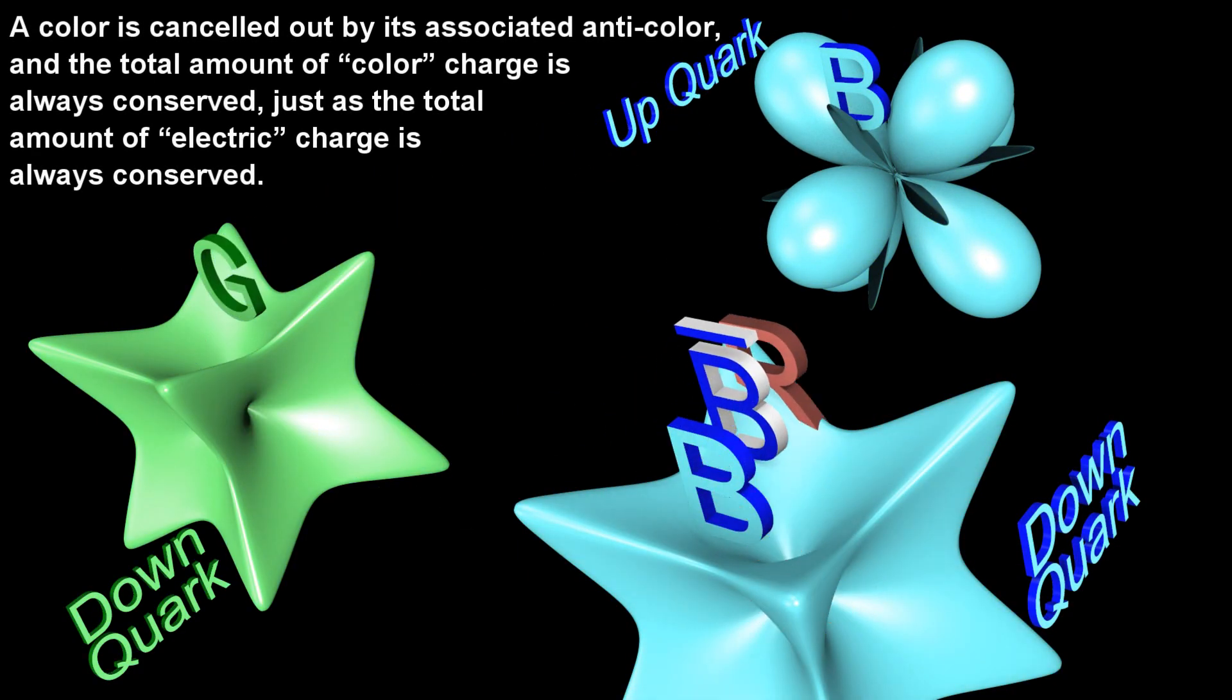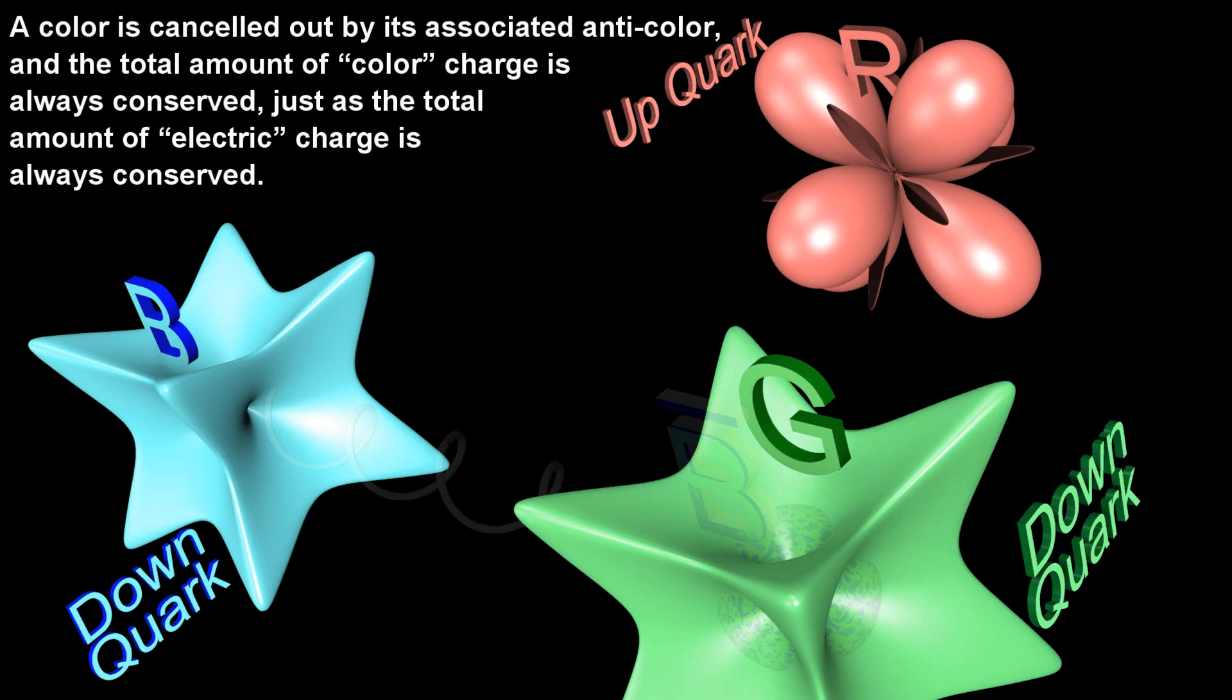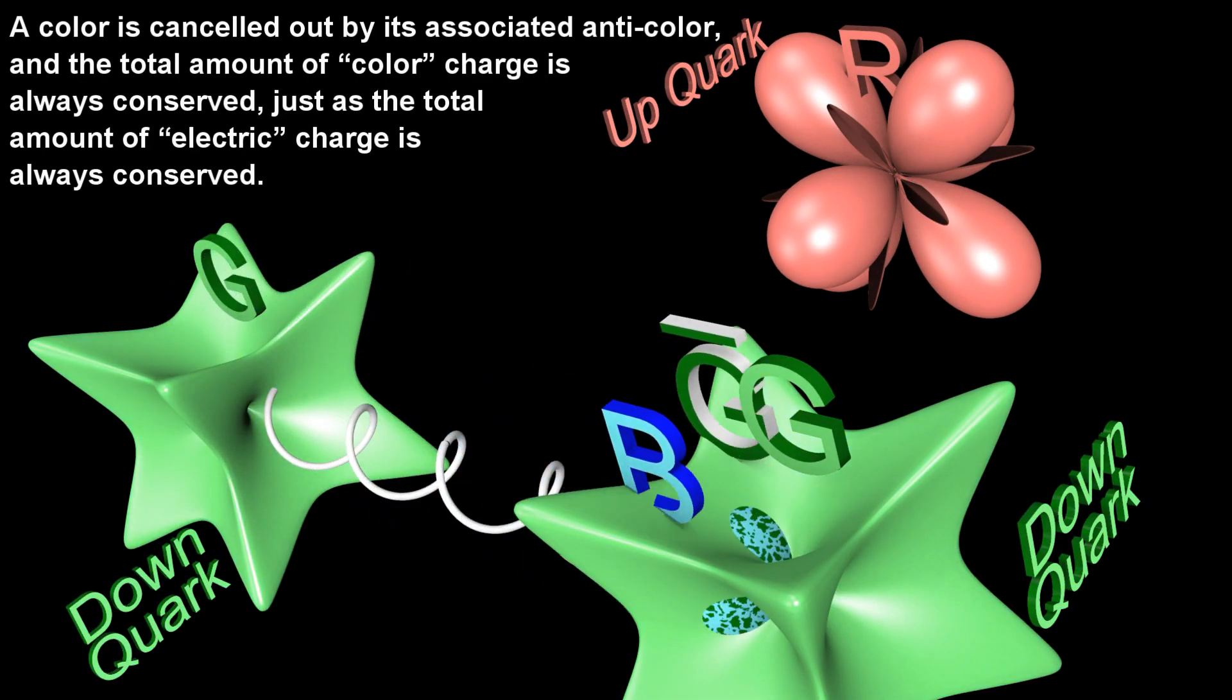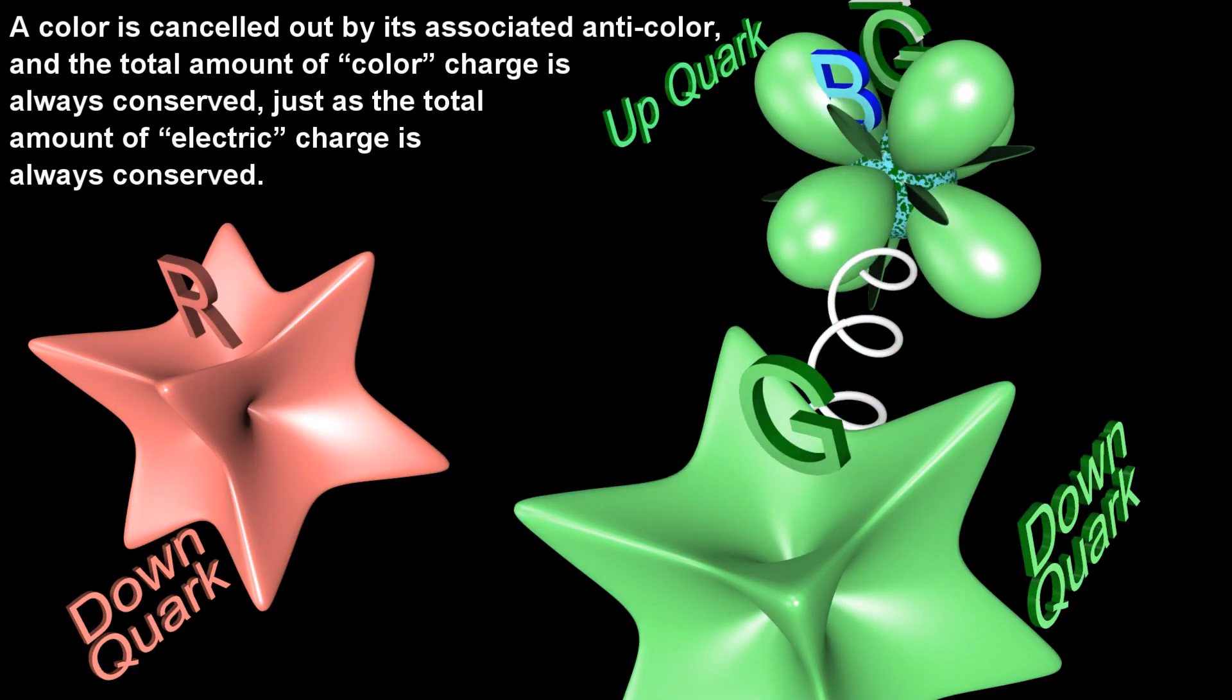A color is canceled out by its associated anti-color, and the total amount of color charge is always conserved, just as the total amount of electric charge is always conserved.